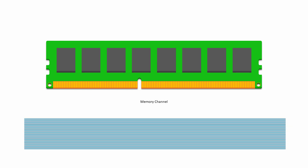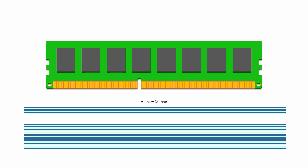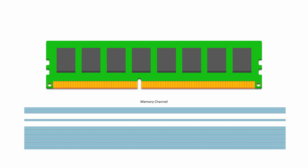First of all, let's consider how a DIMM interacts with the processor. A DIMM is plugged into a slot on the computer's motherboard, which in turn is connected to the computer's memory controller via a memory channel. The memory controller of a modern PC is integrated into the same chip as the CPU. The memory channel includes an address bus, a command and control bus, and a data bus, all drawn onto the motherboard.